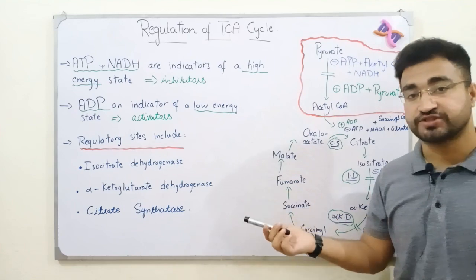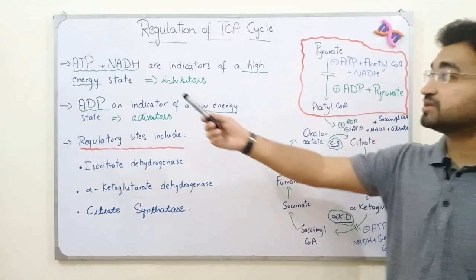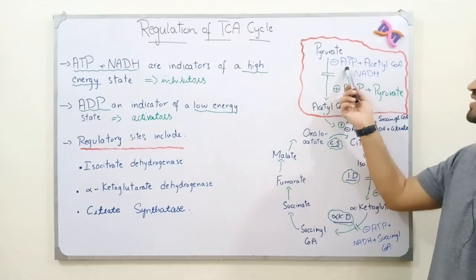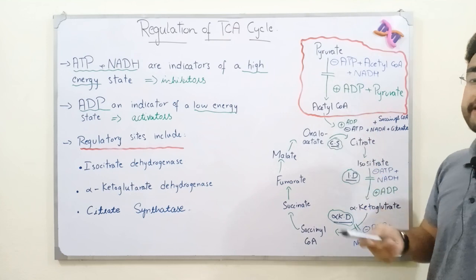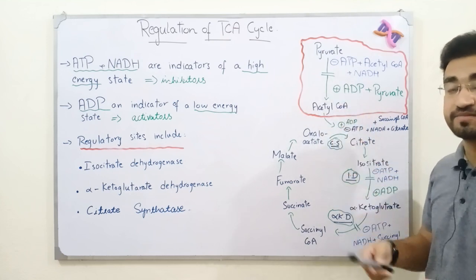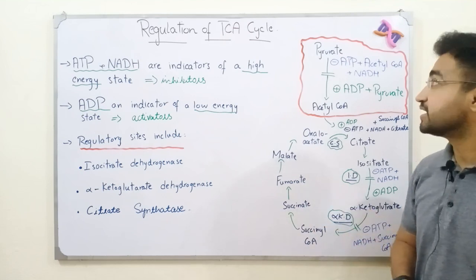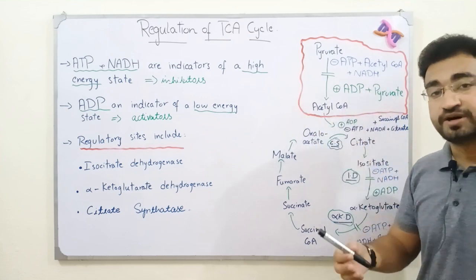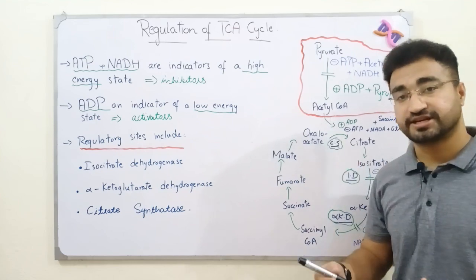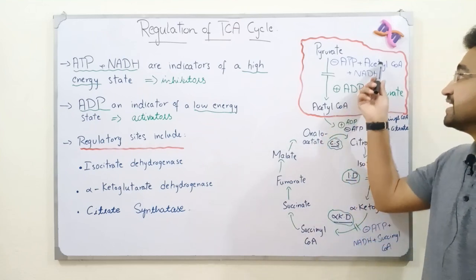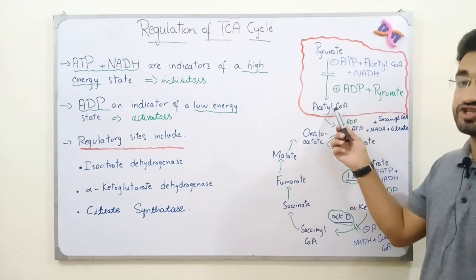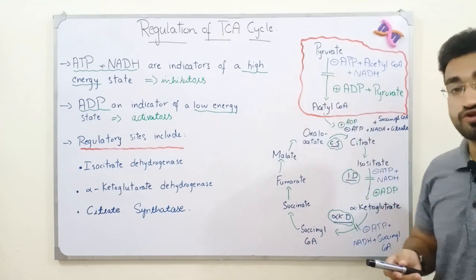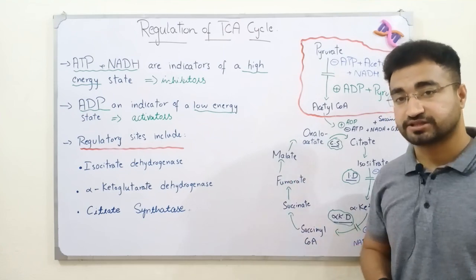As discussed, ATP and NADH are always inhibitors — they indicate a high energy state and will act as inhibitors. Because the cell already has a high amount of energy, there is no need to produce acetyl-CoA and start TCA to generate more energy. Additionally, acetyl-CoA itself causes product inhibition here: when its quantity is very high in the cell, it indicates that there is already a lot of acetyl-CoA capable of producing energy, so there is no need to produce more. This is called product inhibition — the product has inhibited its own enzyme, the PDH complex. In this way, by slowing or speeding up the PDH reaction, we can regulate the TCA cycle.